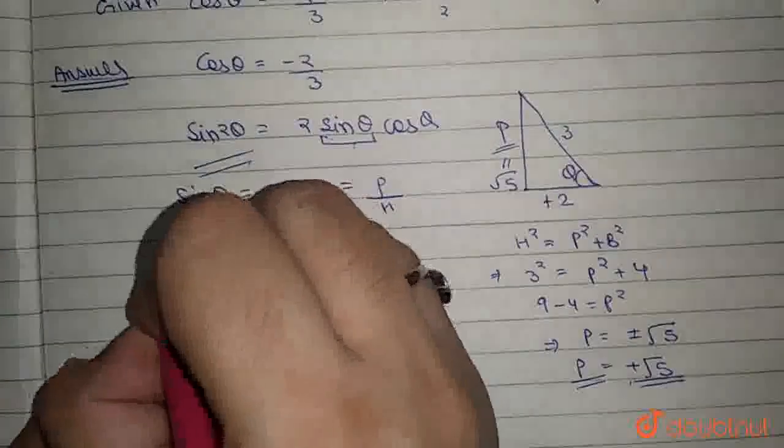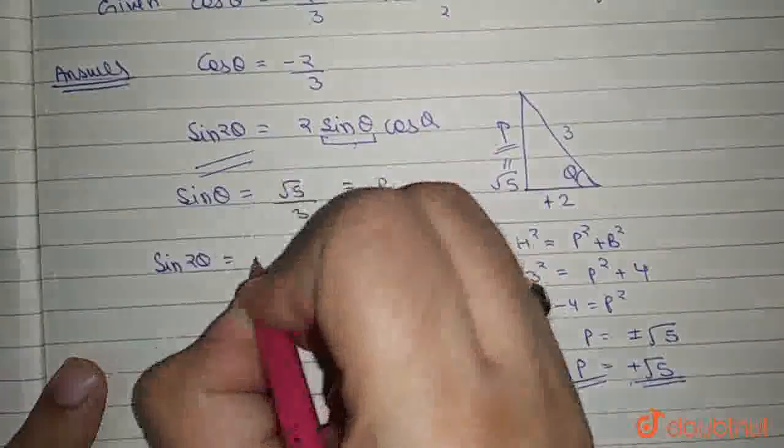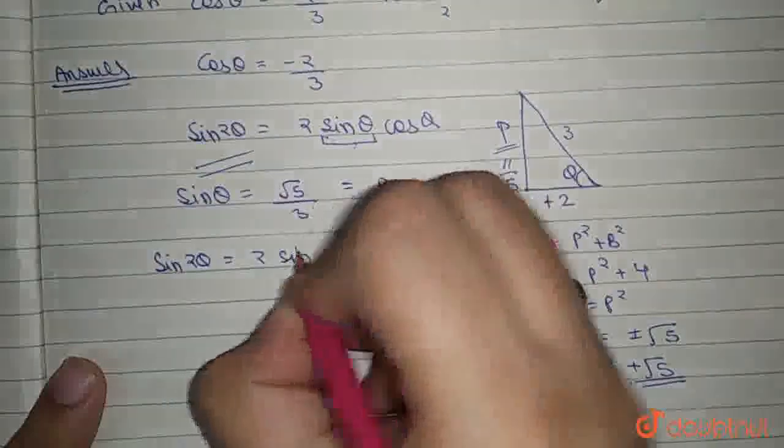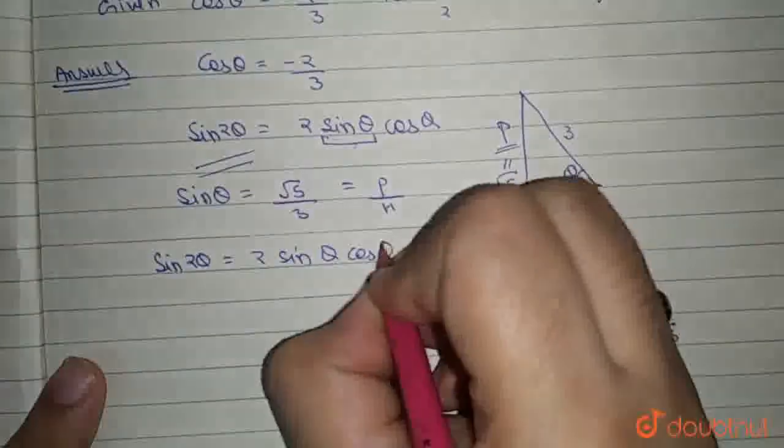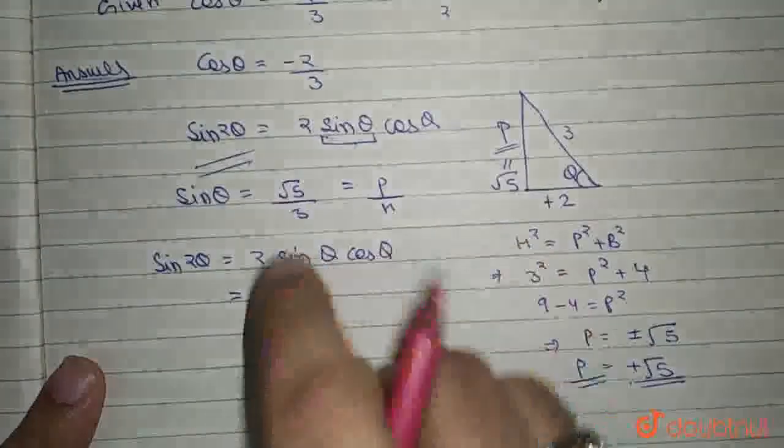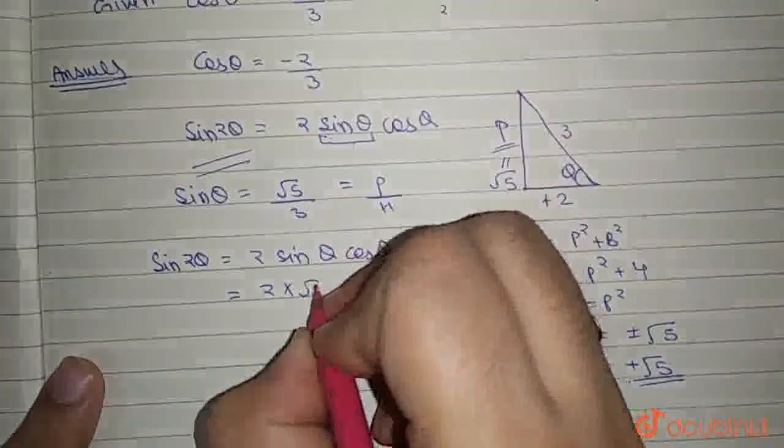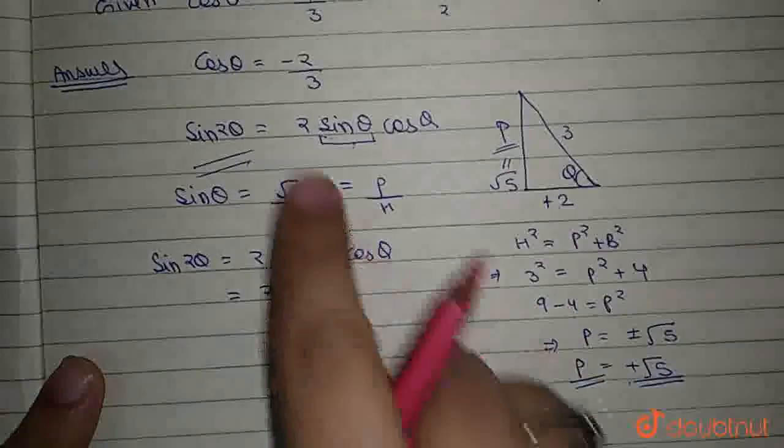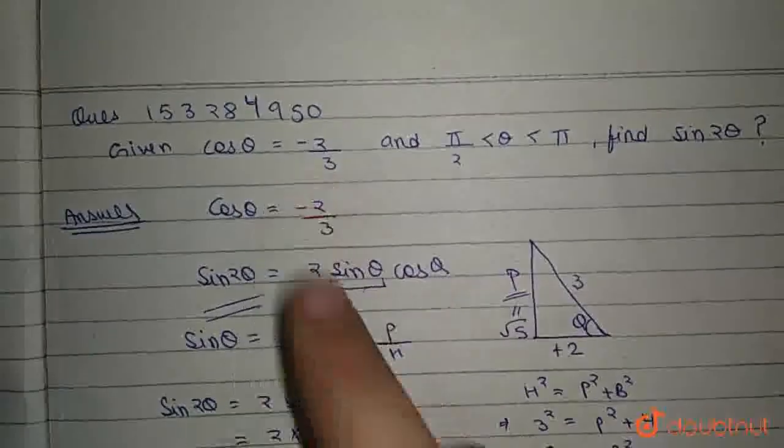So we get sin 2θ = 2 sin θ cos θ, which is equal to 2 × √5/3 × (-2/3).